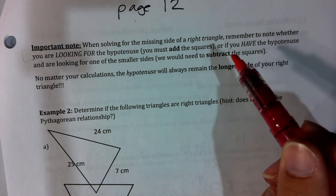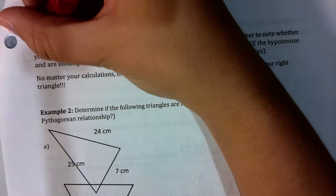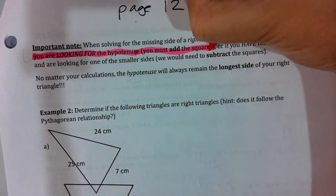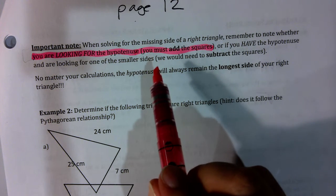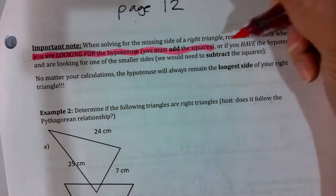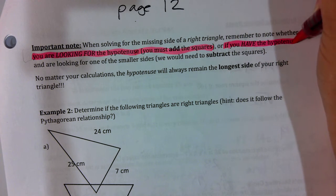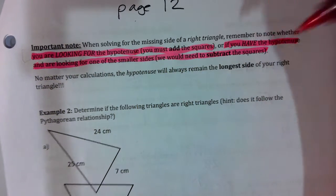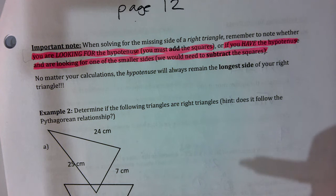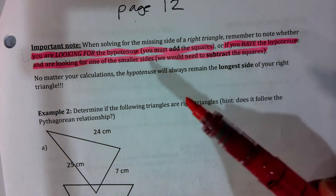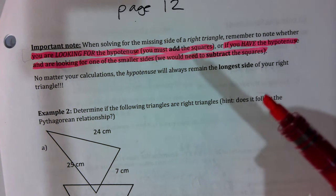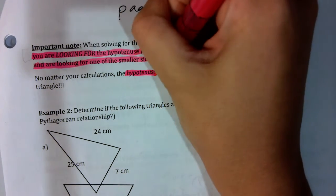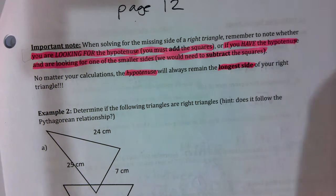When solving for the missing side of a right triangle, remember: if you are looking for the hypotenuse, you must add the squares. If you have the hypotenuse and are looking for one of the smaller sides, you need to subtract the squares. No matter your calculations, the hypotenuse will always remain the longest side of your right triangle.